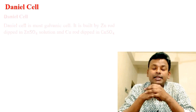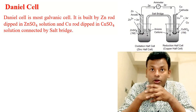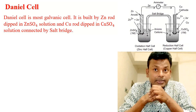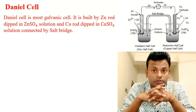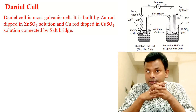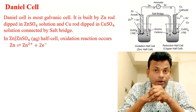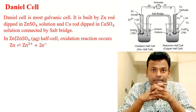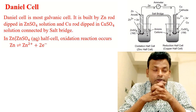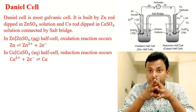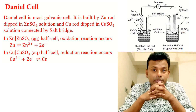The Daniel cell is a well-known galvanic cell. It is built by a zinc rod dipped in zinc sulfate solution and a copper rod dipped in copper sulfate solution, connected by a salt bridge. In the ZnSO₄ half cell, oxidation occurs: Zn → Zn²⁺ + 2e⁻. In the CuSO₄ half cell, reduction occurs: Cu²⁺ + 2e⁻ → Cu.